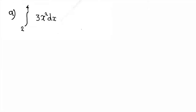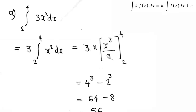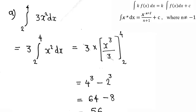First question: integral from 2 to 4 of 3x squared dx. We know that the integral of k times f(x) is k times the integral of f(x) dx, and the integral of x raised to n is equal to x raised to n plus 1, divided by n plus 1.